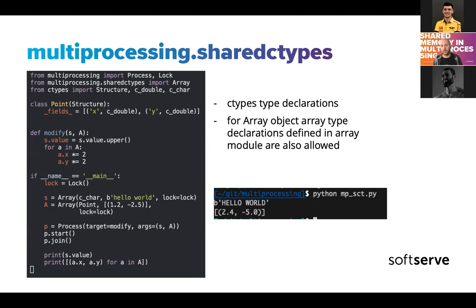This array object is compatible with another array object coming in Python, so it accepts two different formats. In the Python library there's a format for array objects storing Python values — like 'i' for integer — and this object accepts that, but it also accepts the notation from ctypes which is slightly different. My advice: don't mix them in the same code, it becomes a mess. Just stick to one.